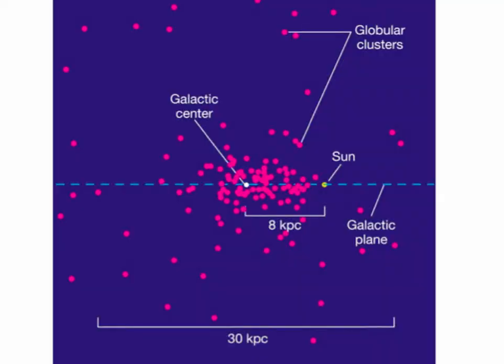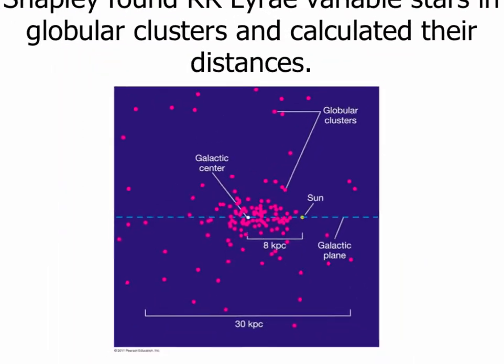Not only that, but Shapley found RR Lyrae stars — variable stars that Henrietta Leavitt had also worked on — in globular clusters. So he was able to calculate distances to globular clusters. And sure enough, he found that most of them were not only in the direction of Scorpius and Sagittarius, but they tended to cluster around what we now call the center of the galaxy.